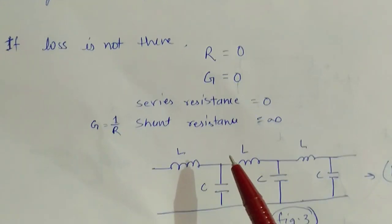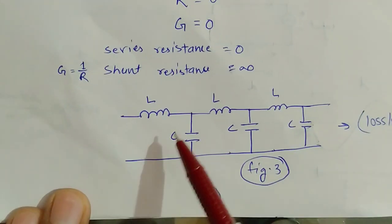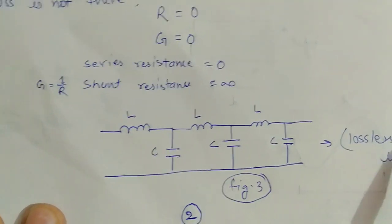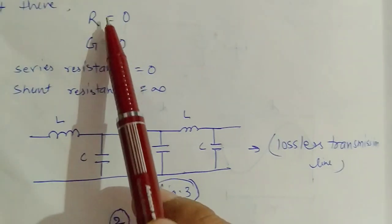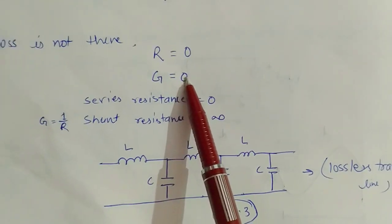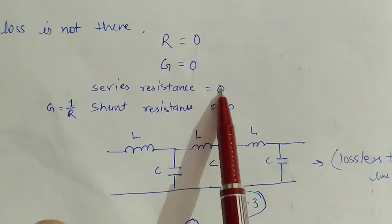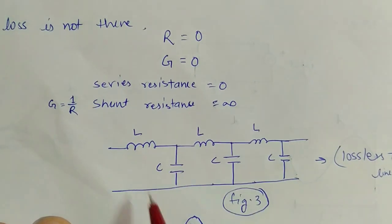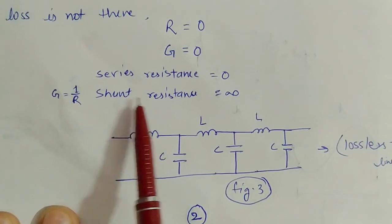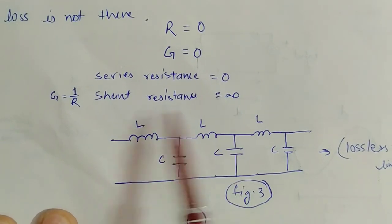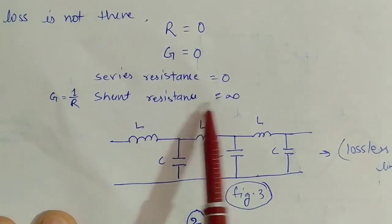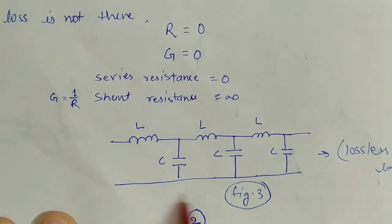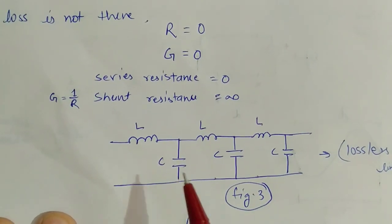In this lossless transmission line, R is 0 and conductance is 0, meaning series resistance is zero — there is negligible loss — and the leakage current between the two conductors is also zero, so shunt conductance is 0 and shunt resistance is infinity. So with these two set to zero, we represent the transmission line as only L and C.